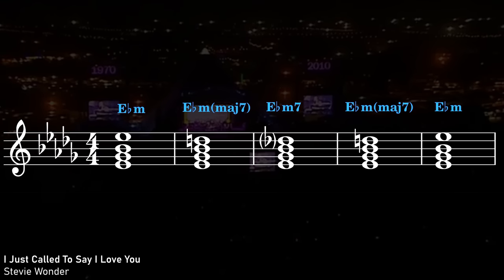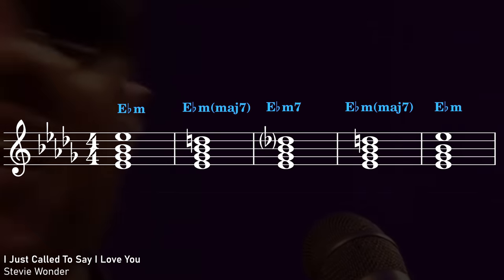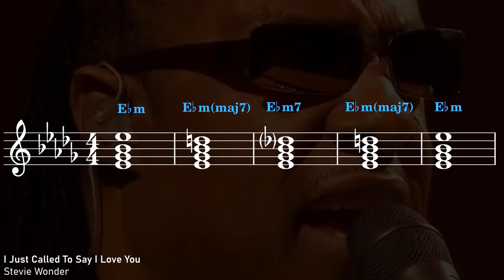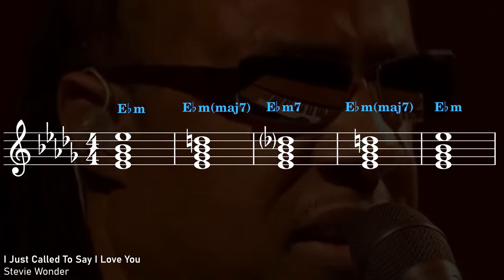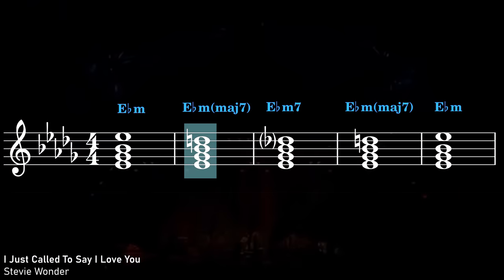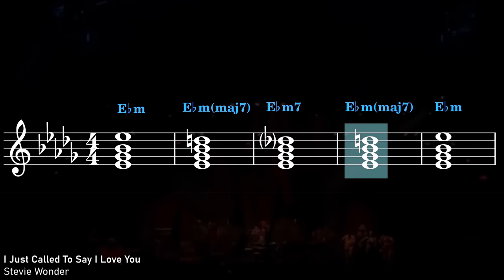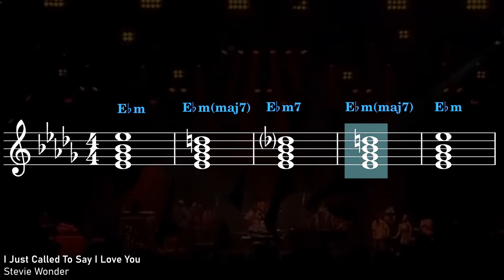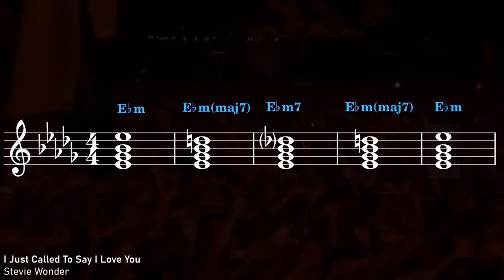Sometimes the line cliché could climb down and then back up again. We can see this in "I Just Called to Say I Love You" by Stevie Wonder. Here the line cliché runs down from E flat minor, to E flat minor major 7, to E flat minor 7, and then it steps back up the way it came — back to E flat minor major 7, and eventually back to E flat minor where we began.